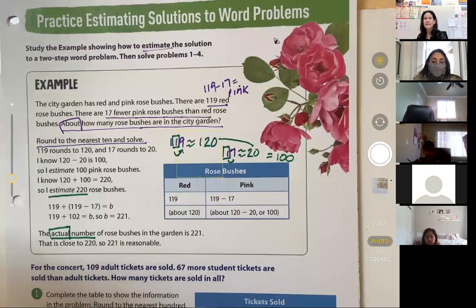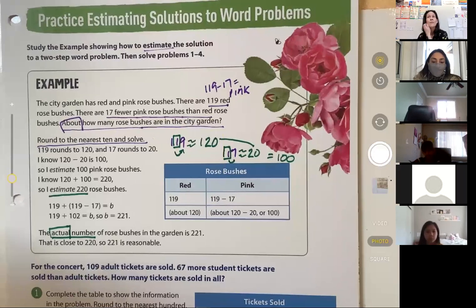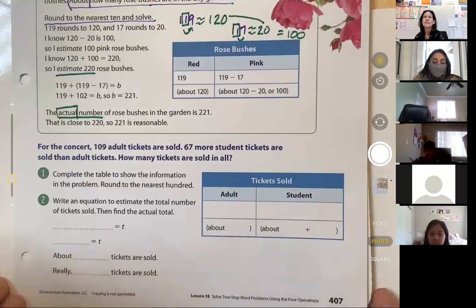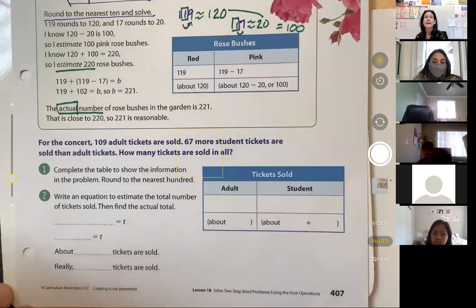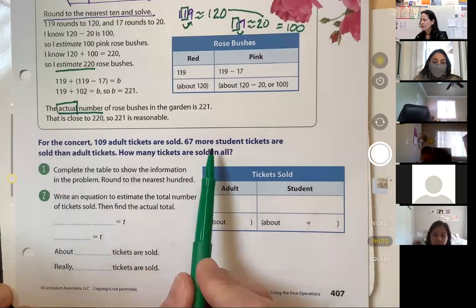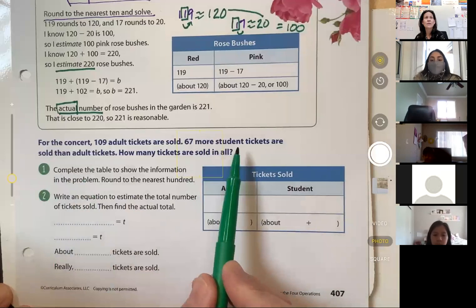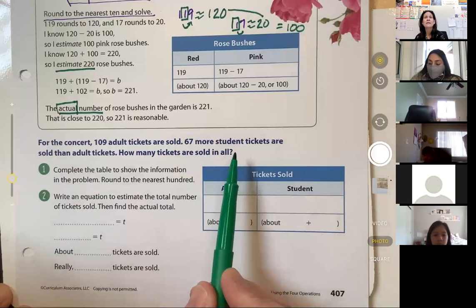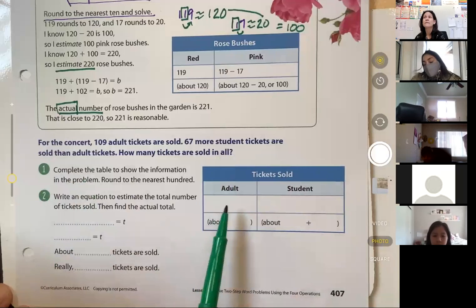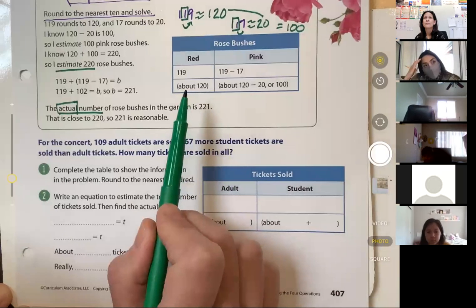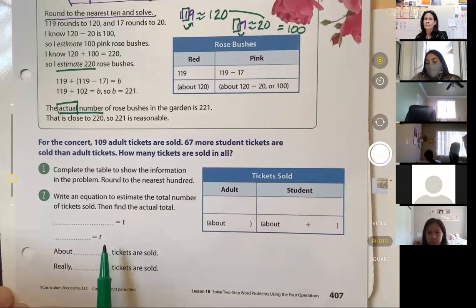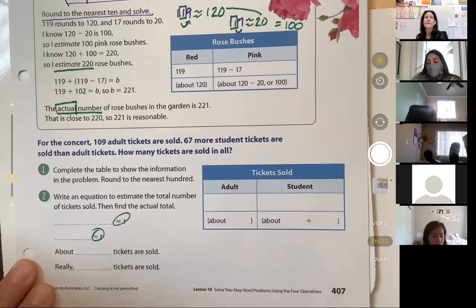Now, what are you going to be tasked with for the hybrid students during your independent work time? Well, you are going to have several questions to take a look at. Here on page 407, it reads, For the concert, 109 adult tickets are sold. 67 more student tickets are sold than adult tickets. How many tickets are sold in all? You need to complete this table just as we did above. Check out the example. And then you need to write an equation that's going to help you solve. Remember that these letters offered are always for the unknown.